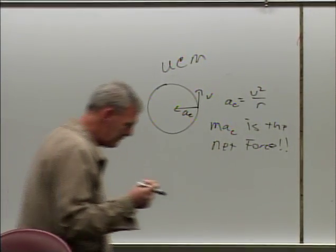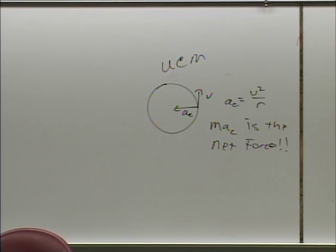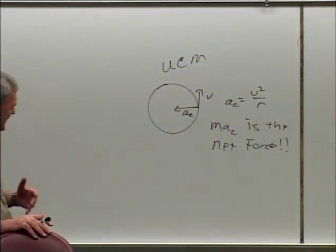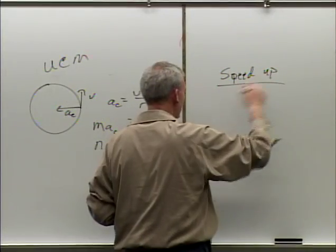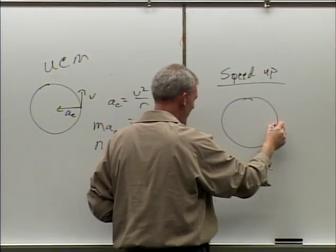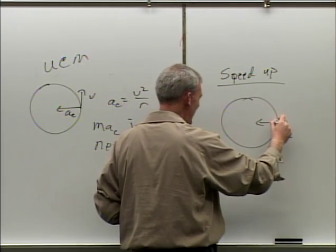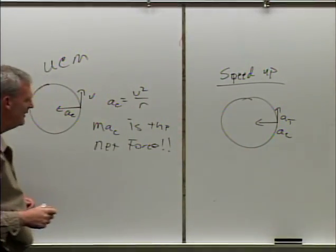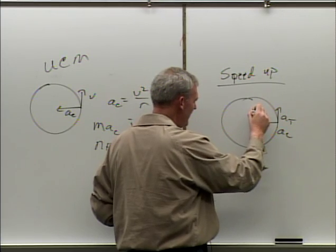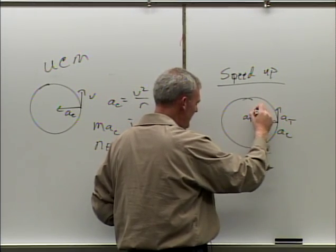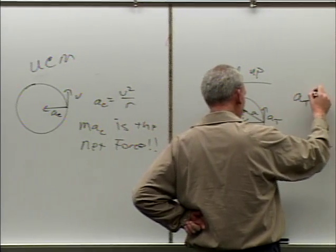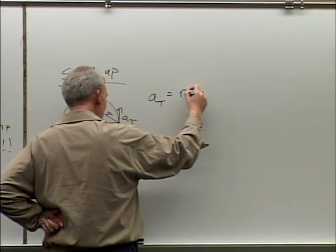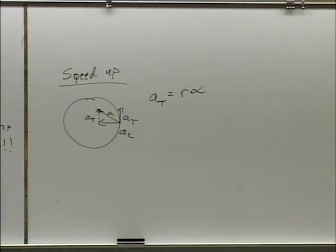Now if this object speeds up while going around the circle — say we put a retro rocket on him — then it's not uniform circular motion anymore. He's speeding up, so we get a tangential acceleration. If you speed up going around the bend, you'll have two components of acceleration: ac and at, which add up as vectors.